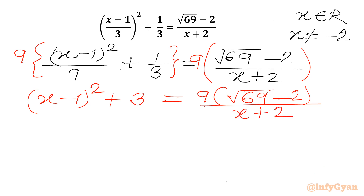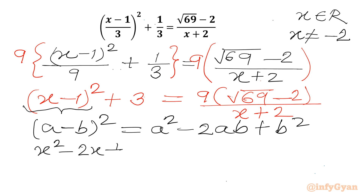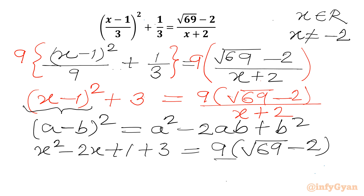Now we will use the algebraic formula (a minus b)² equals a² minus 2ab plus b². Applying it here, we can write x² minus 2x plus 1 plus 3 equal to 9 times the square root of (69 minus 2 over (x plus 2)).